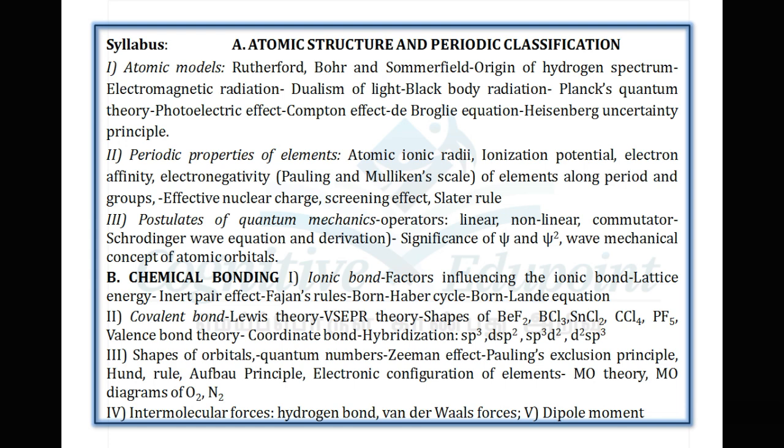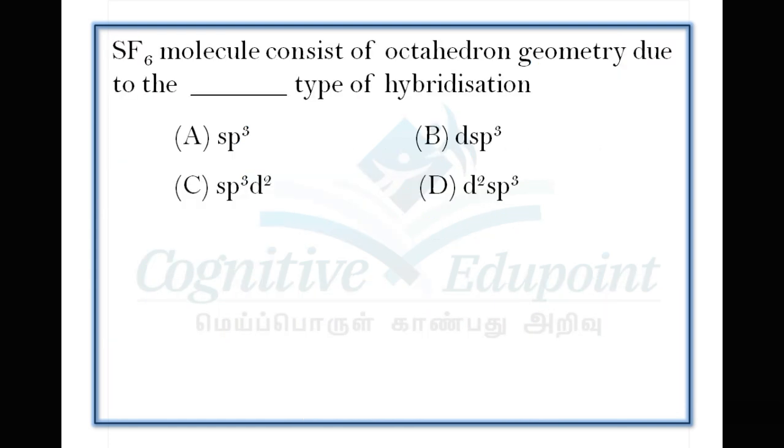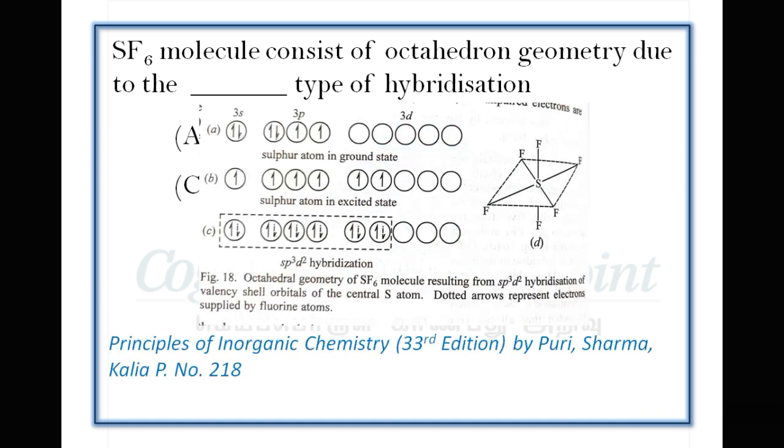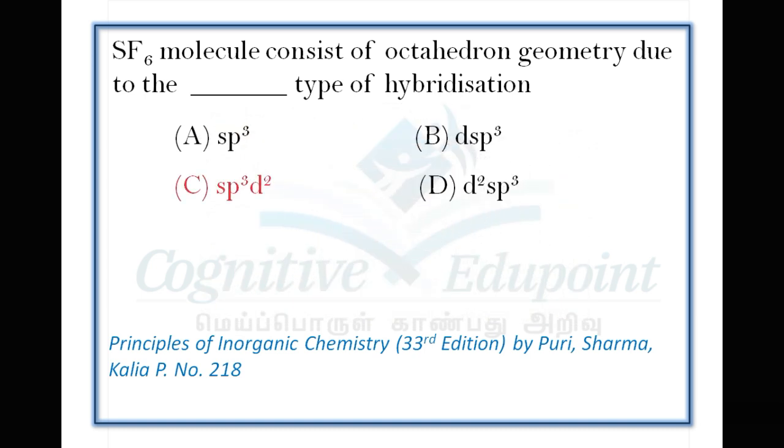Let's look at the first question. SF6 molecule consists of octahedral geometry due to which type of hybridization? Different hybridization options: sp3, dsp3, sp3d, sp3d2. The correct answer is sp3d2. Sulfur hexafluoride hybridization: one s orbital, three p orbitals, and two d orbitals. The geometry is octahedral with coordination number 6. Correct answer is C, sp3d2 hybridization.